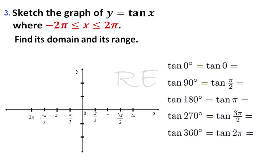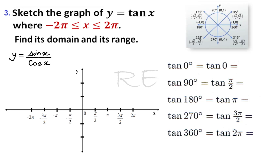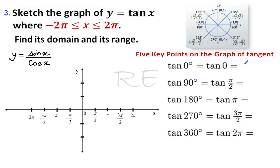Sketch the graph of y equal to tan x, with x between negative 2 pi and 2 pi. We're going to use the five key points of the tangent, and we're going to see tangent as sine x over cosine x. So tangent of zero is equal to zero over one, which is zero.